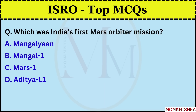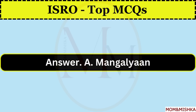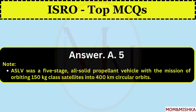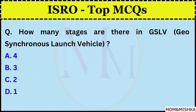Which was India's first Mars Orbiter Mission? Mangalyaan, option A. How many stages were there in ASLV — Augmented Satellite Launch Vehicle? 5 stages, option A. ASLV was a 5-stage, all-solid-propellant vehicle with the mission of orbiting 150 kg class satellites into 400 km circular orbits. How many stages are there in GSLV — Geosynchronous Launch Vehicle?